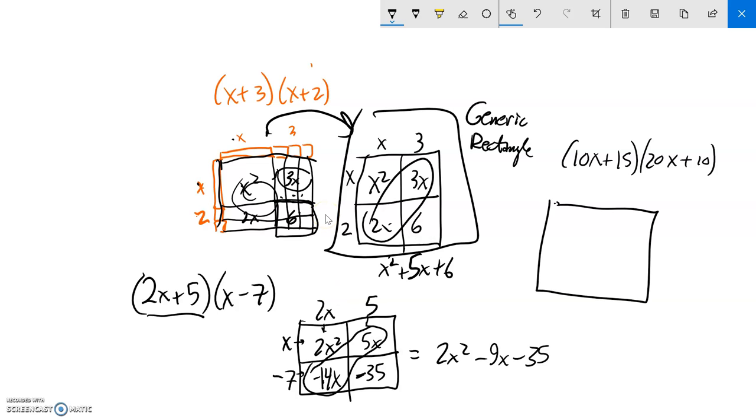Horrible. So I'm just going to 10x, 15. Notice I took this side and put it here. 20x plus 10. 20x and 10. And now I'll just multiply. So 10x times 20x. The x times x is going to give me an x squared. 10 times 20 is 200. So I would have to have 200 x squareds in there.